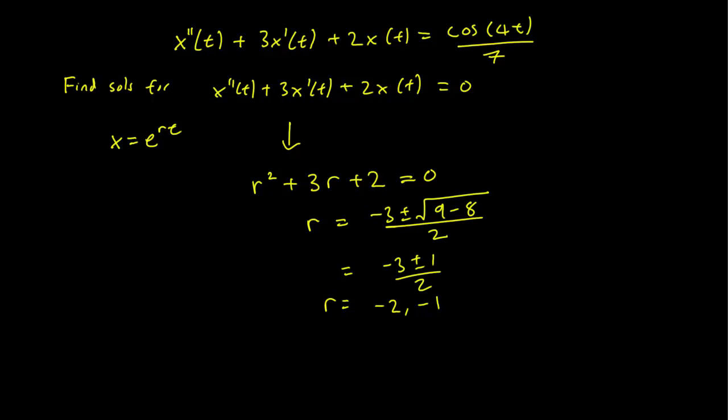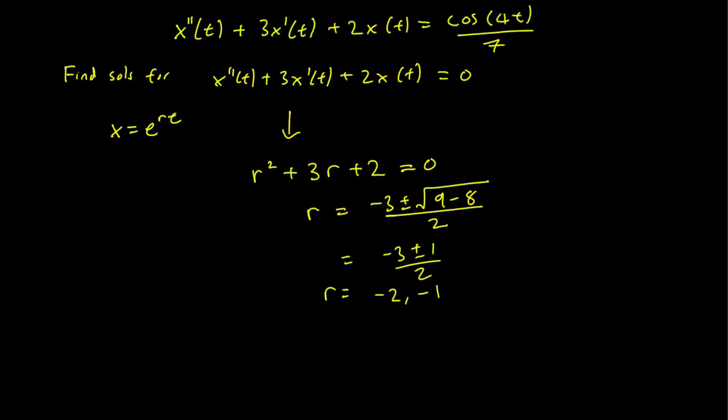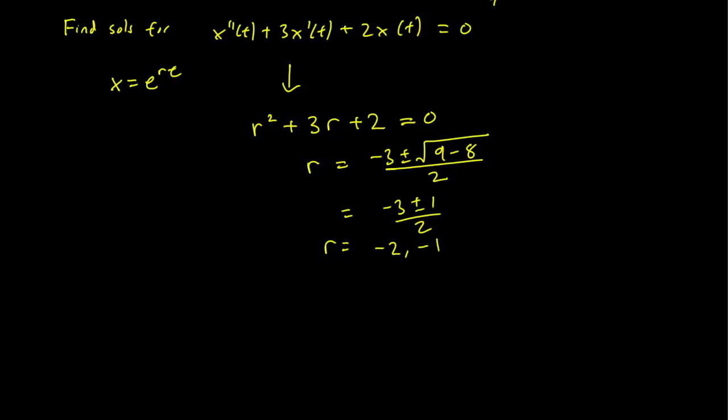So we have our little, so this is clearly going to be the overdamped case. And our complementary solution, the solution for the homogeneous equation, is just going to be c1*e^(-2t) + c2*e^(-t).